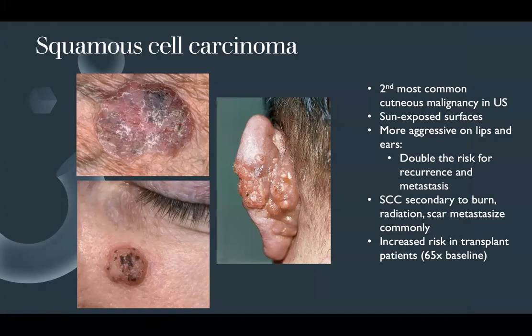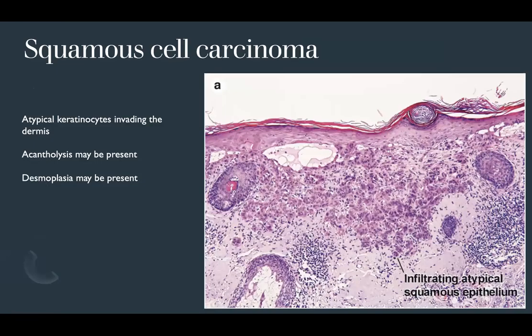Squamous cell carcinoma is the second most common cutaneous malignancy in the US, often occurring on sun-exposed surfaces, and is more aggressive on the lips and ears with double the risk for recurrence and metastasis. SCCs can develop secondary to trauma, burns, radiation, or scar. Transplant patients have a 65% increased risk above baseline, so immunosuppression greatly increases the risk of SCC development.